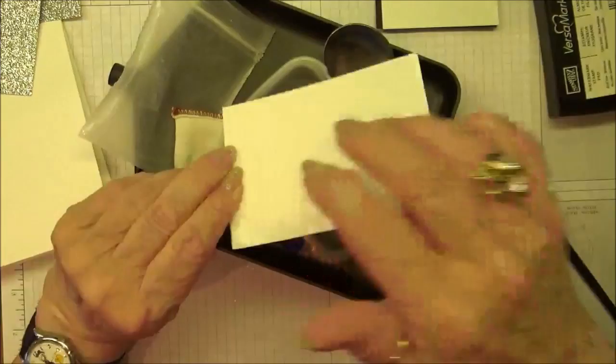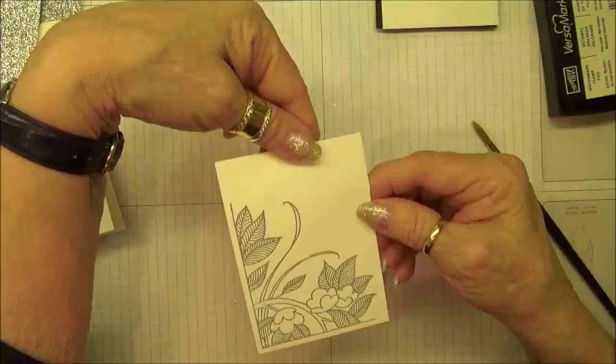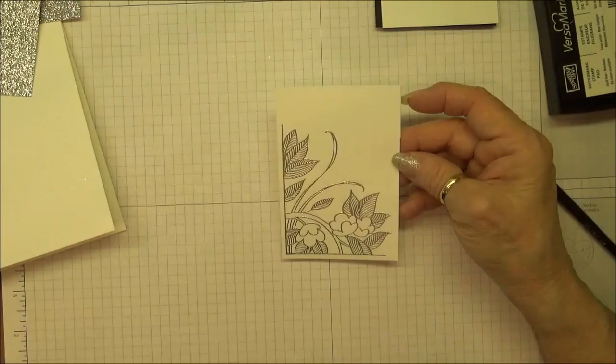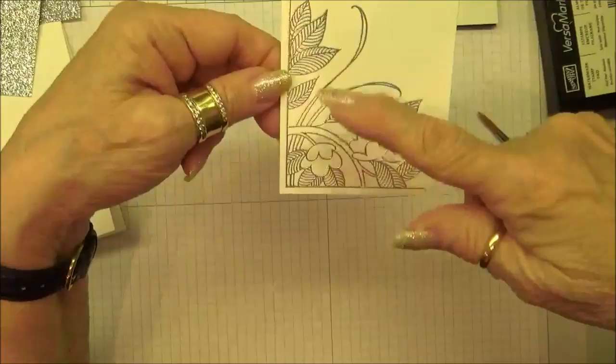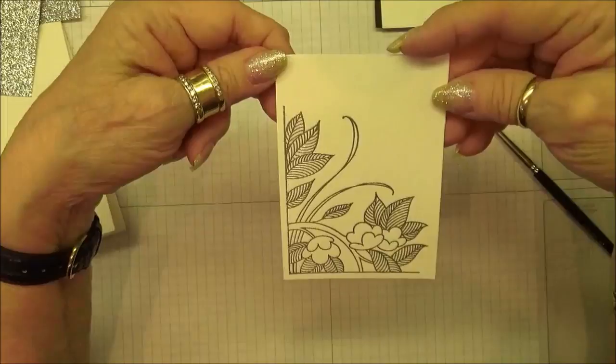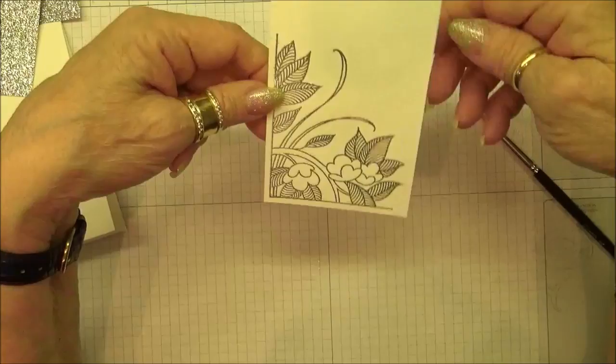Then we'll go ahead and heat emboss this. You probably don't need to have me talk you through the whole thing, so I'm just going to speed up the video and I'll be back in just a second. Okay, I'm back. As you can see by using the embossing buddy, we didn't end up with any little splatters anywhere. It's really important that every time you heat emboss, you use that embossing buddy first. By cutting down on the static, you'll get a much cleaner embossed image.